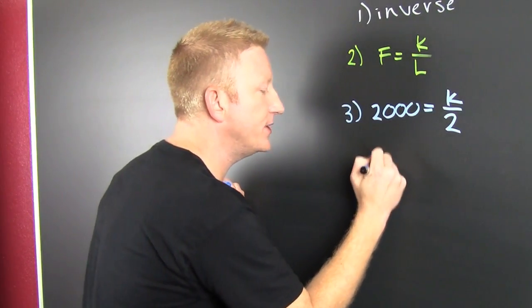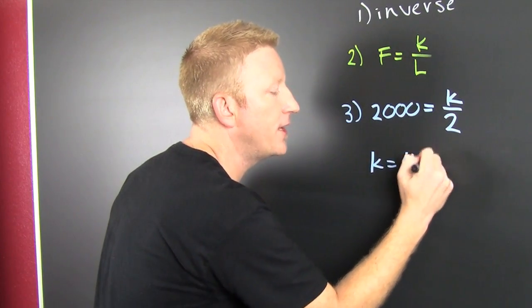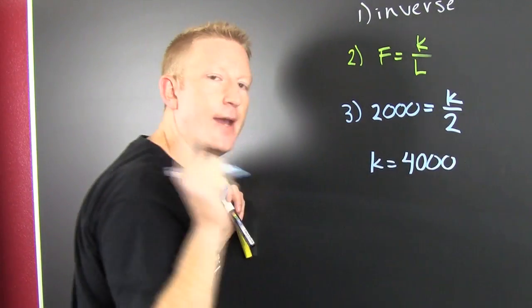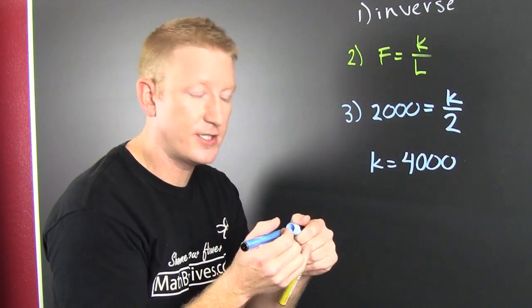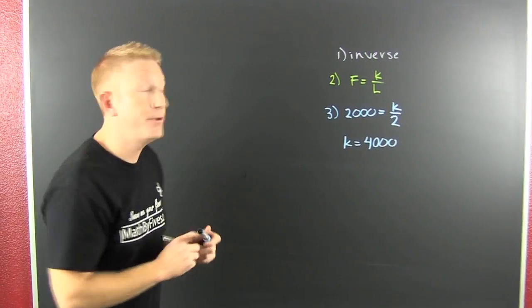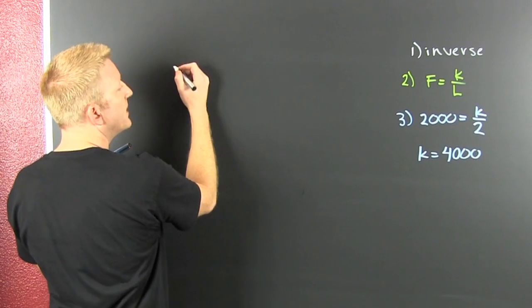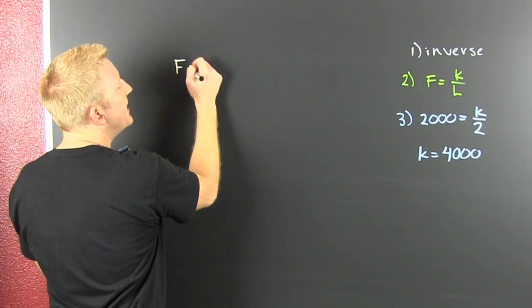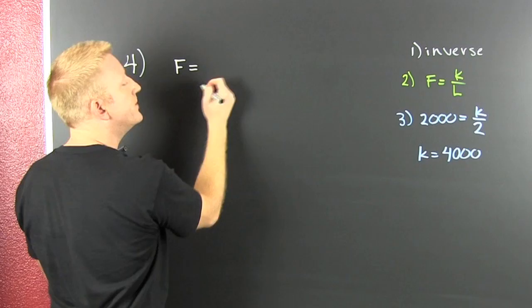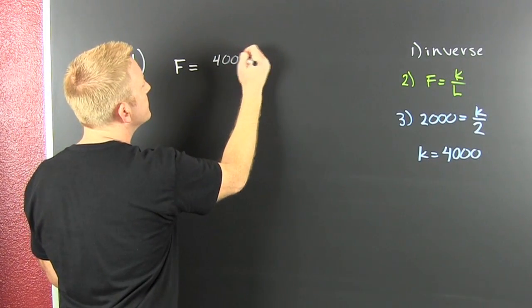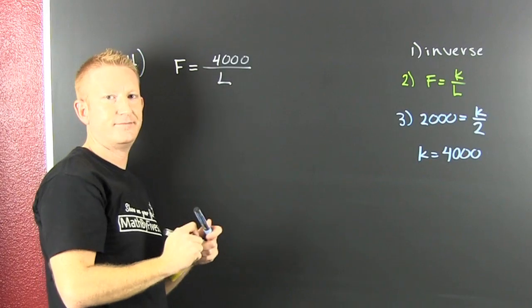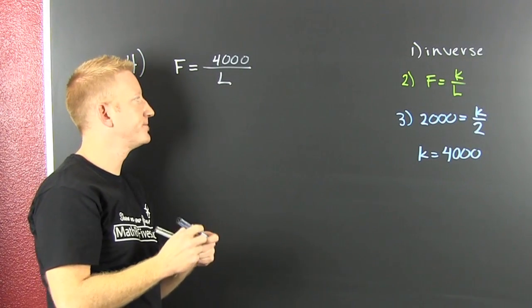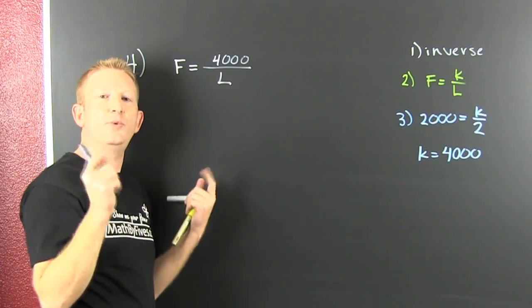Now we're gonna take that found k and we're gonna get a specific equation, specifically putting that over here. So then my force is going to be 4,000 divided by the length of the lever. How clever.